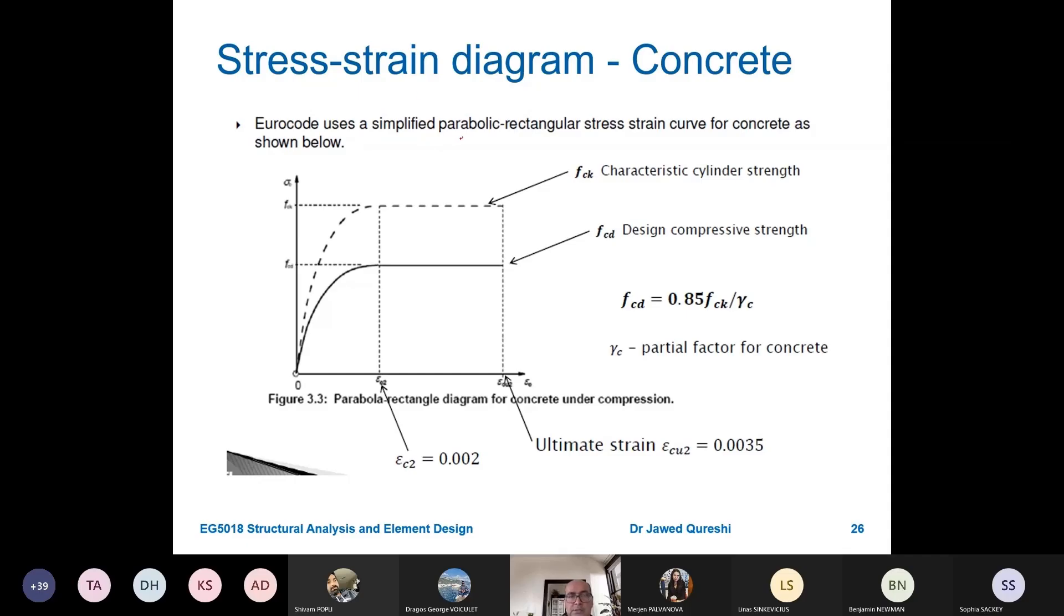Euro Code 2 has the simplified parabolic stress strain curve for concrete, where vertical is stress and horizontal is strain. fcd is your design compressive strength, and fck is characteristic cylinder strength that you determine from cubes. Design is always going to be less, it's a kind of safety factor. Then strain is 0.002 for concrete for most concrete, and the ultimate strain is 0.0035.